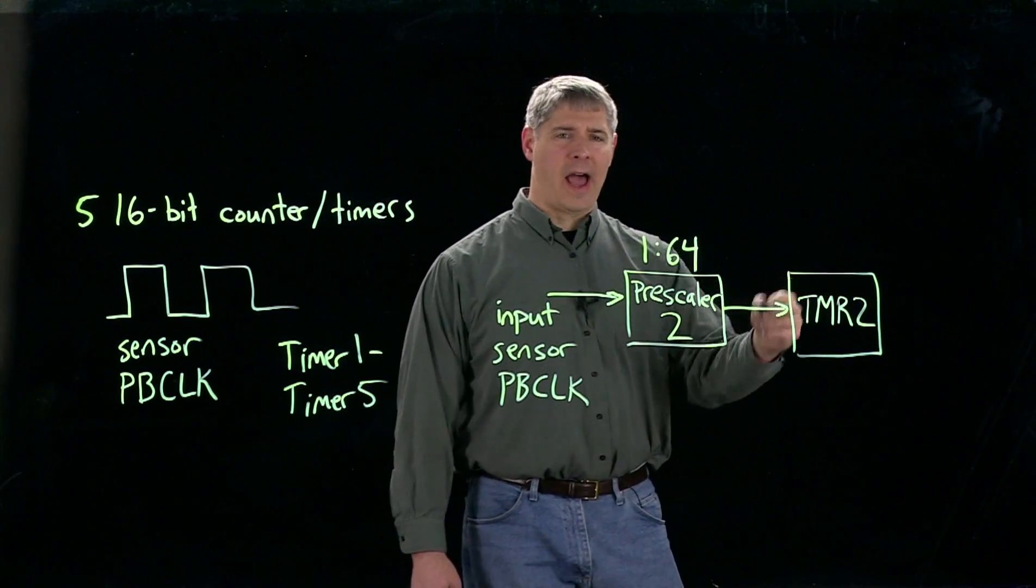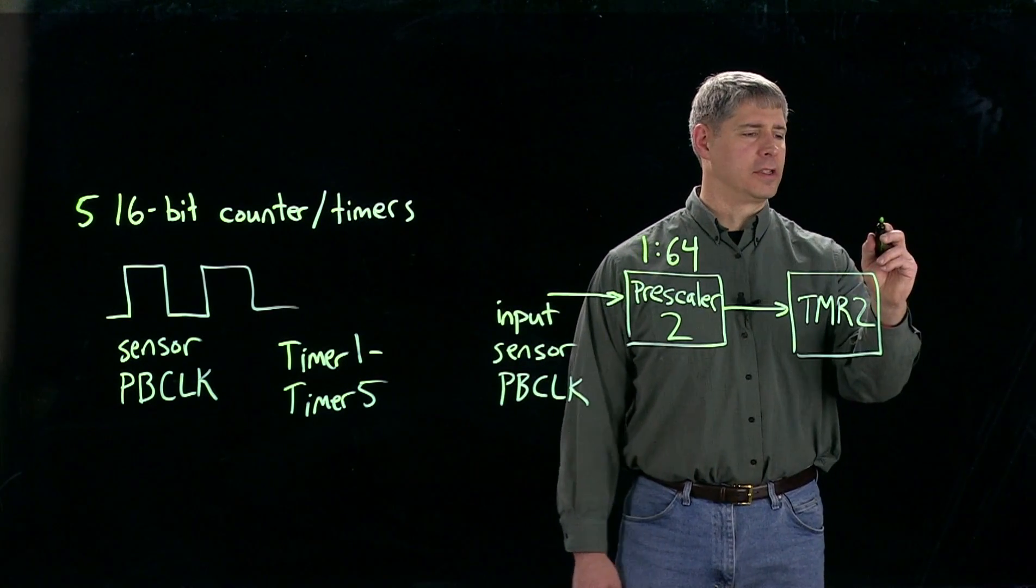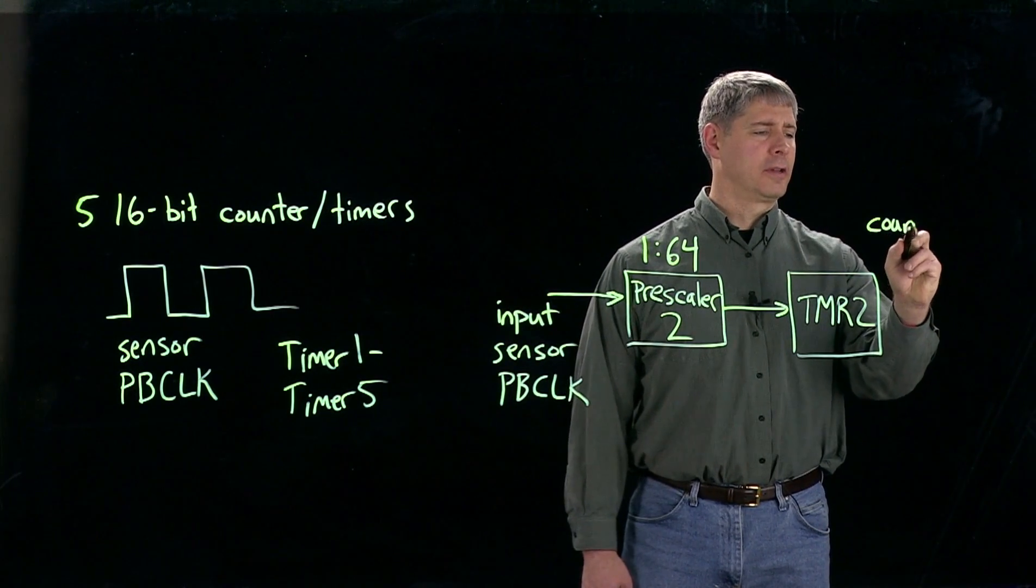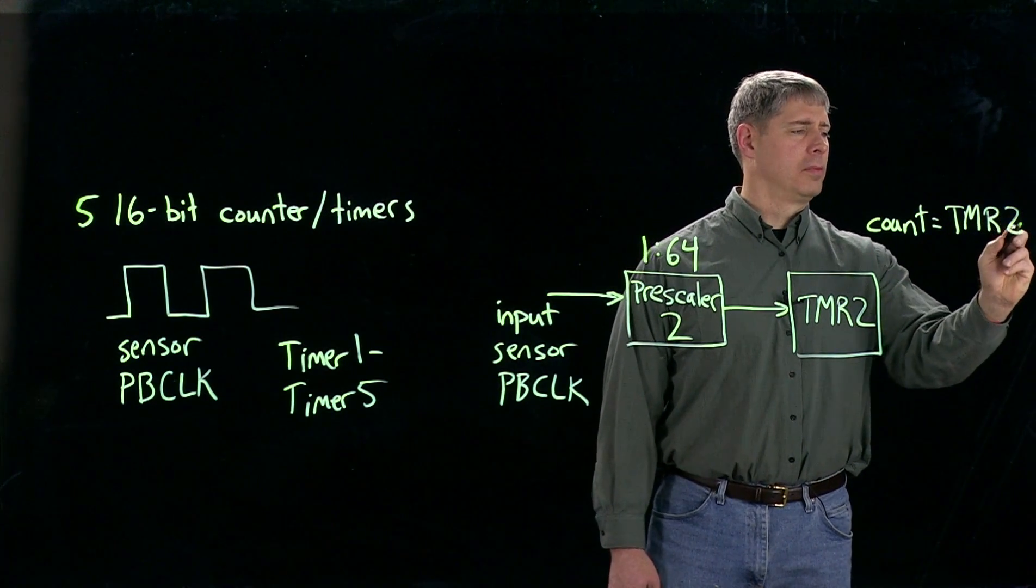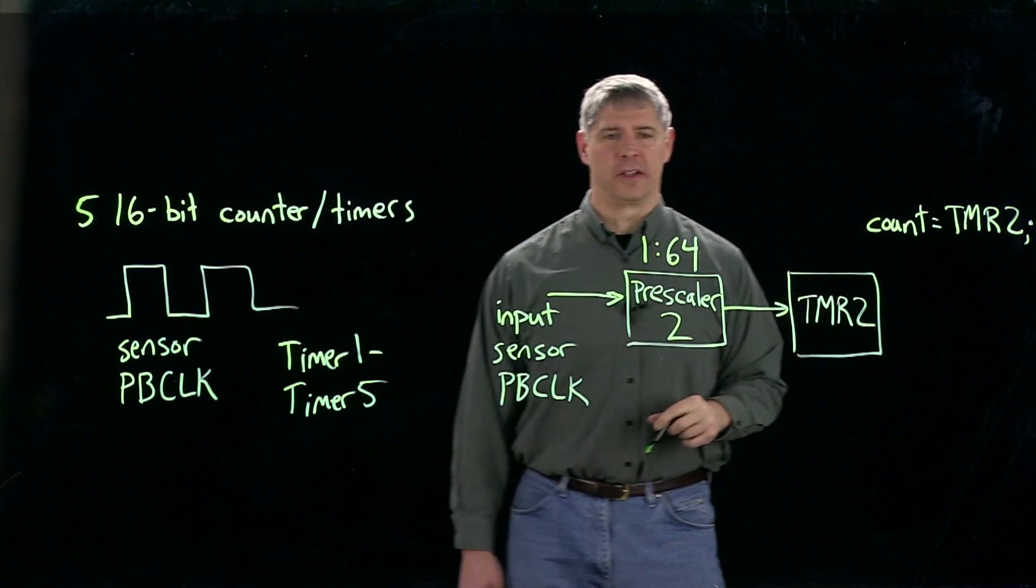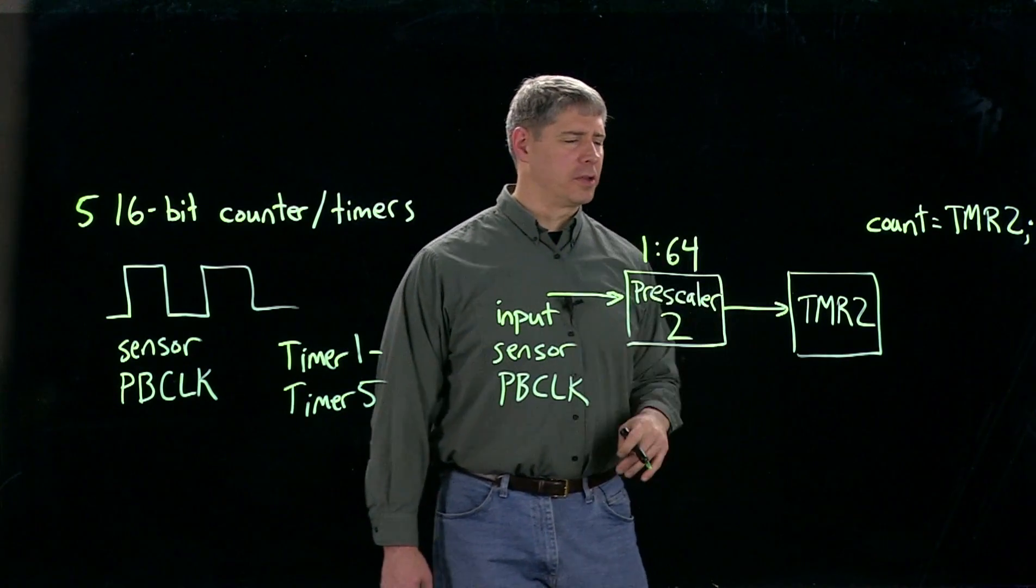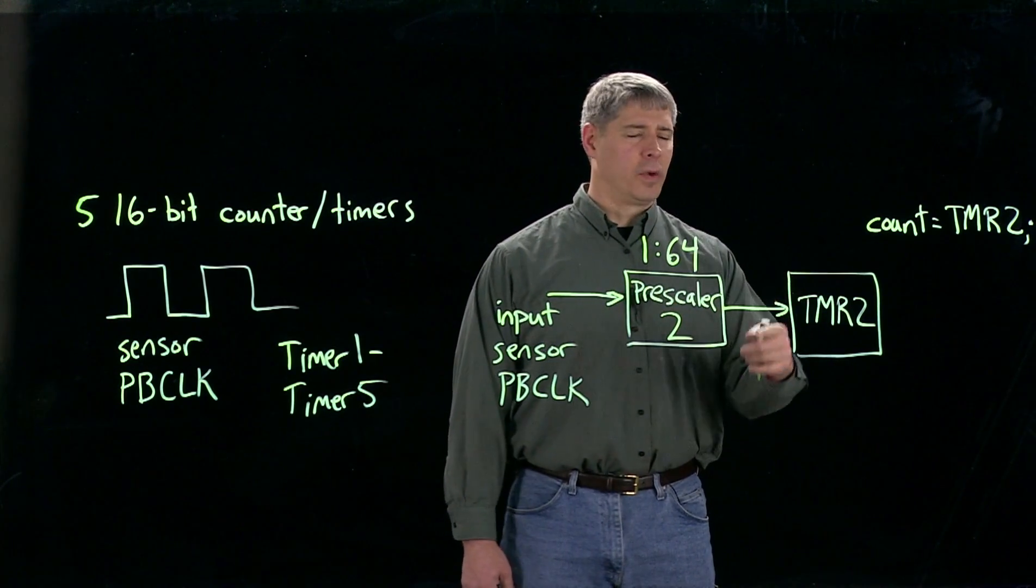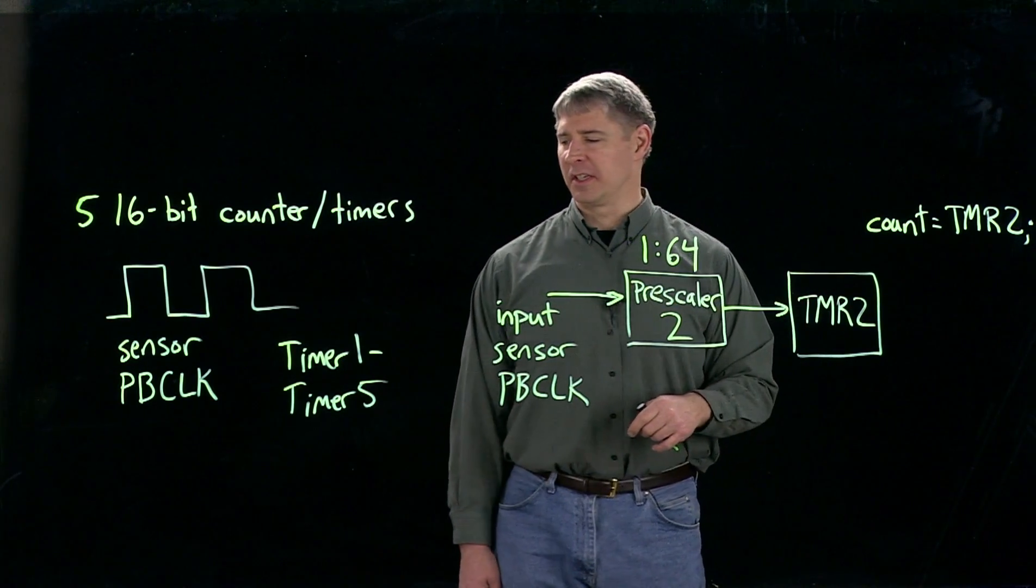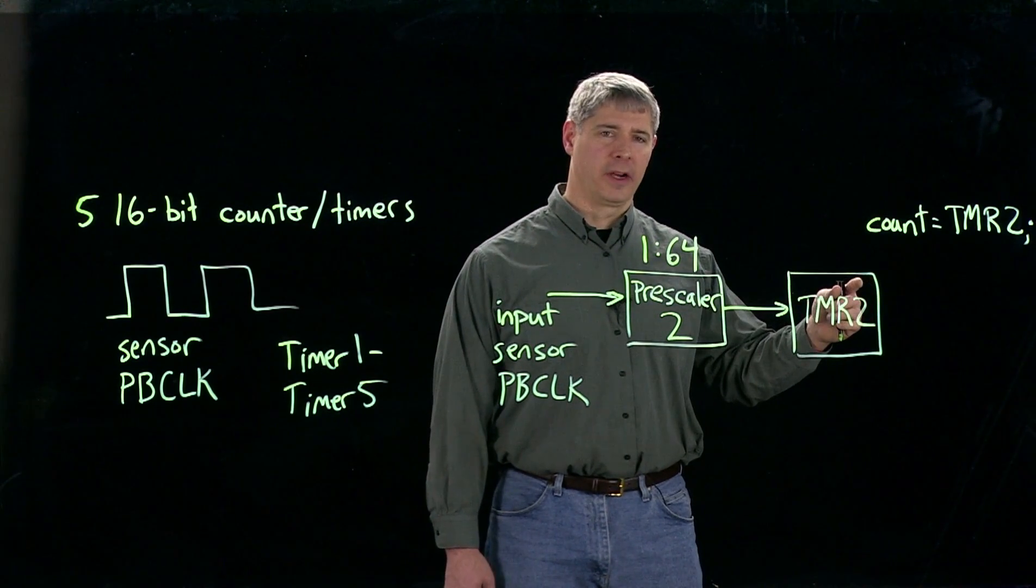So if we want to ask what's the current count in timer 2, we can write a line of C code that just says count equals timer 2, and count here is an unsigned integer. There's one other thing we can do with this. As I've set it up now, once it counts up to 2 to the 16 minus 1, it's going to then roll over to 0 and start counting up again from there.